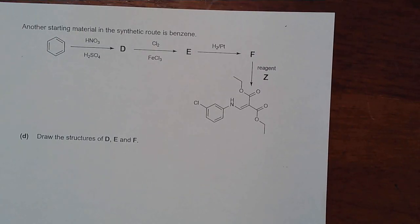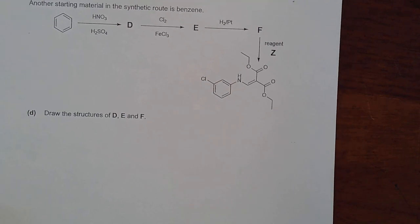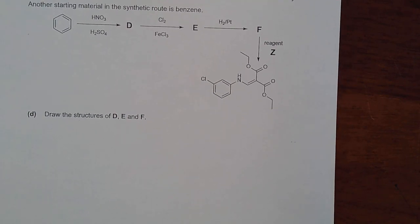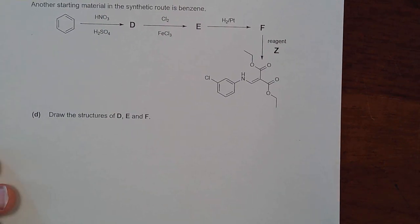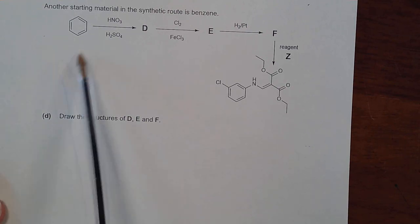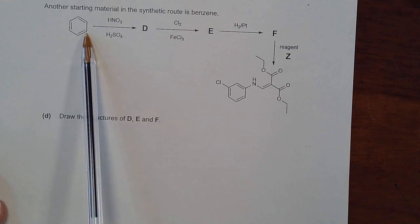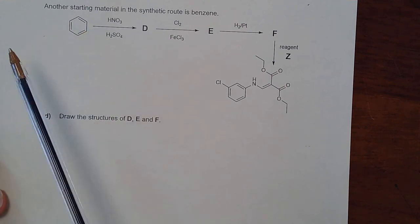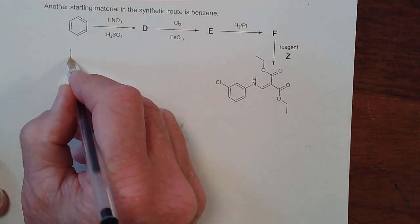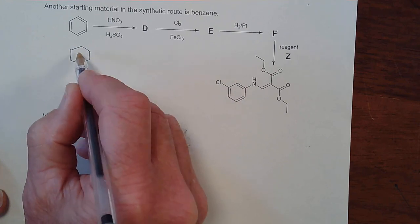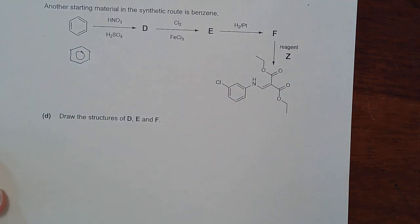The next part of the question moves to a benzene ring. If you are in your second year of study, you will likely have covered nitration and possibly halogenation of a benzene ring. The Olympiad prefers the Kekulé structure, showing all double and single bonds as a resonance form, rather than the resonance hybrid with a circle representing delocalised π electrons.